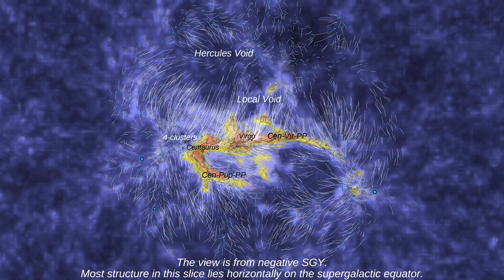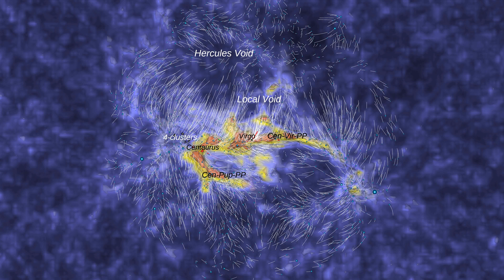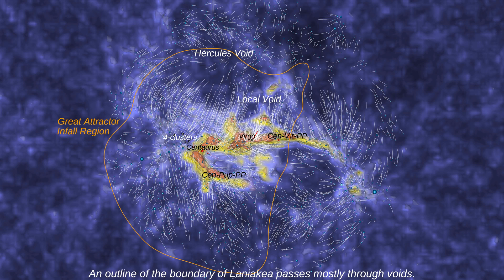The view is from negative SGY. Most structure in this slice lies horizontally on the supergalactic equator. The prominent exception at the left is the Antlia strand portion of the Centaurus-Puppis filament. An outline of the boundary of Laniakea passes mostly through voids.